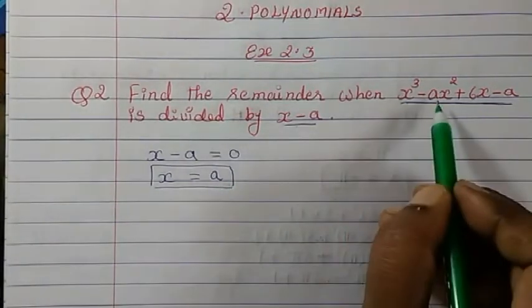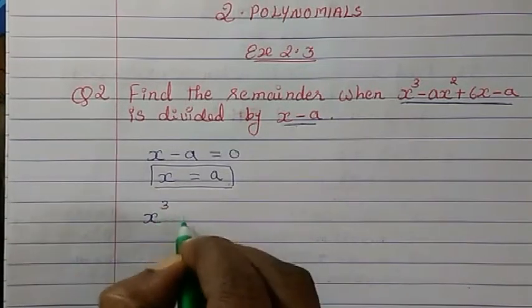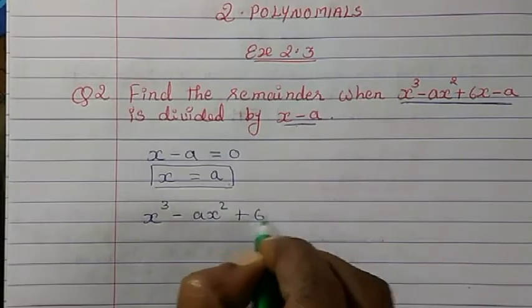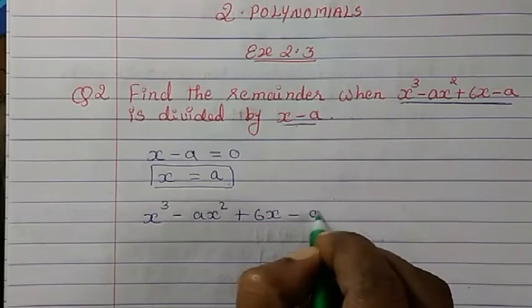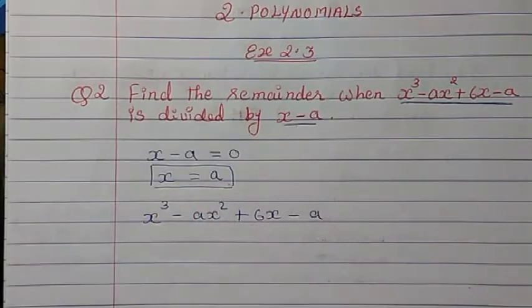Now this we have to apply here in the polynomial. So that is x³ - ax² + 6x - a. So now wherever x is there, we have to place the value of a.